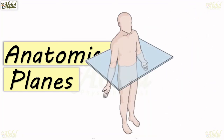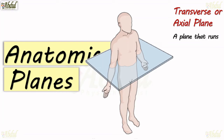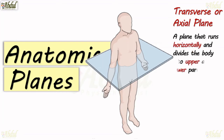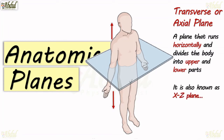Number three is the transverse or axial plane — a plane that runs horizontally and divides the body into upper and lower parts, as you can see in the diagram. It is also known as the XZ plane.